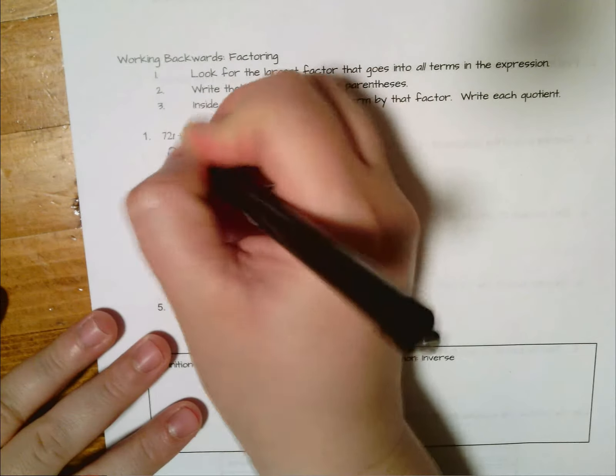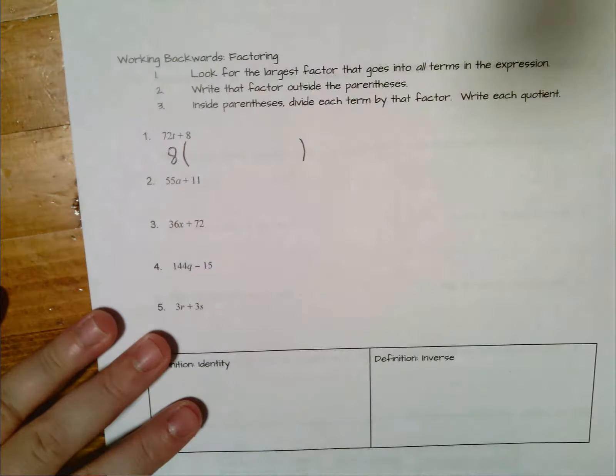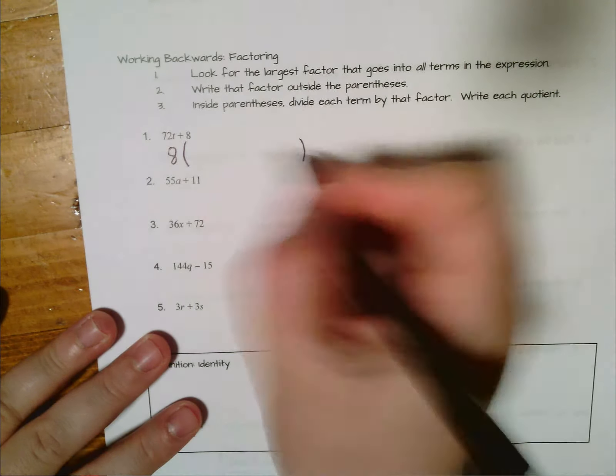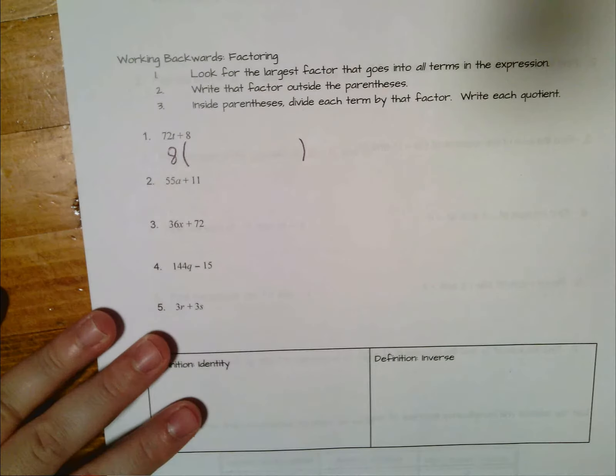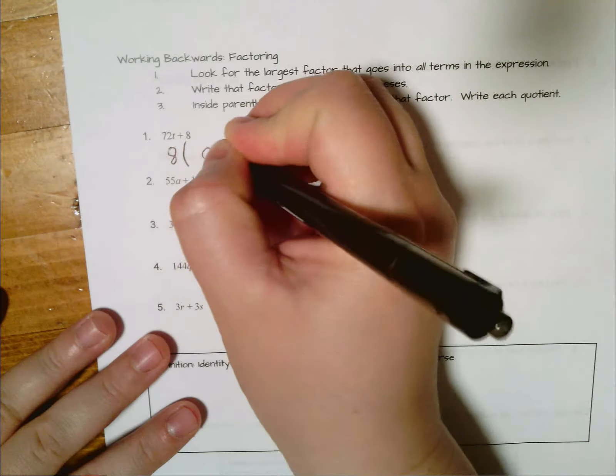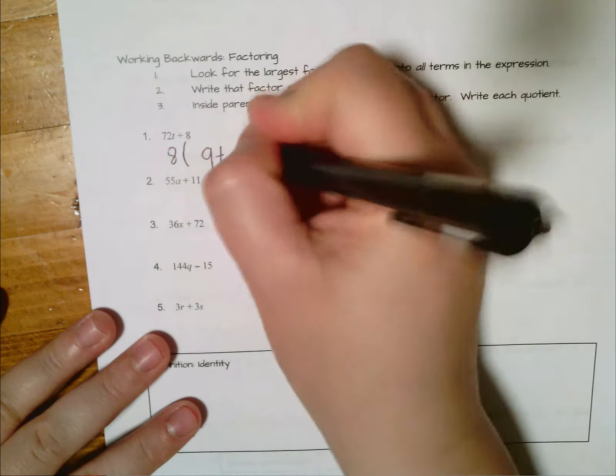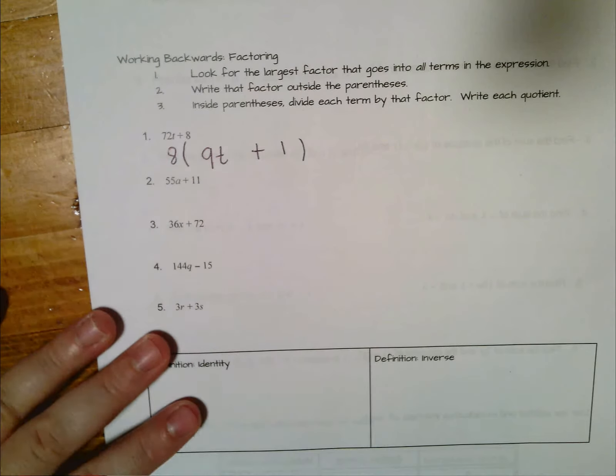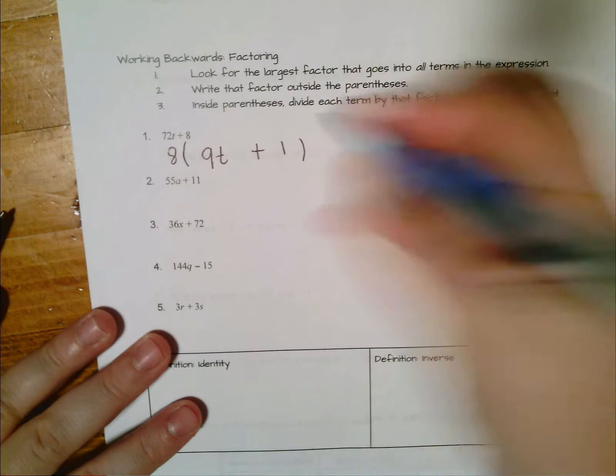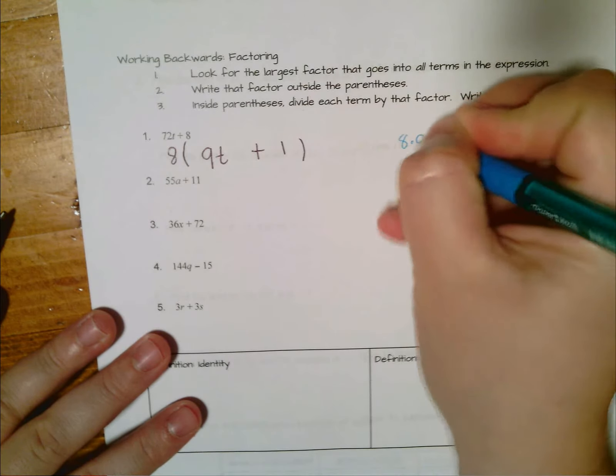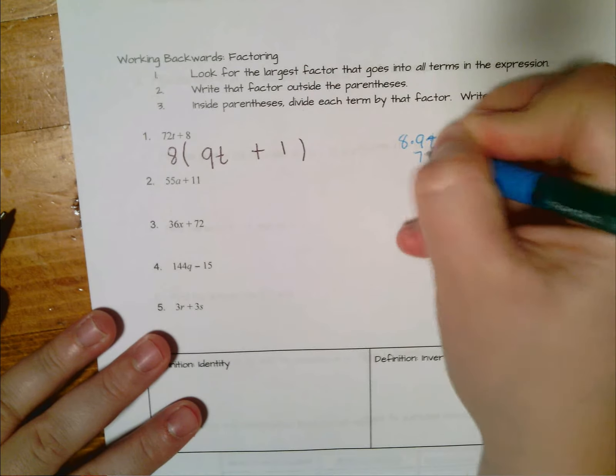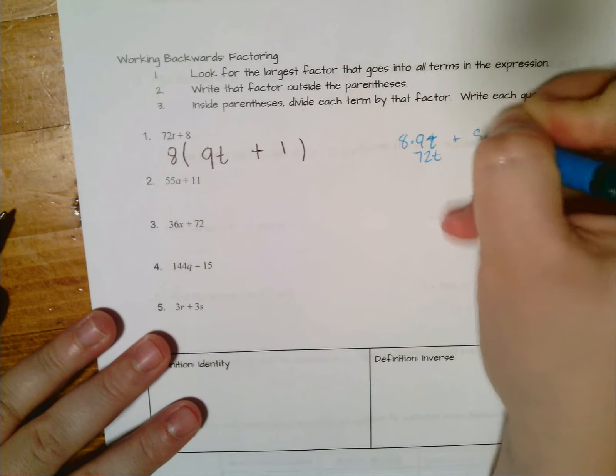So what we're going to do is we're going to write eight outside the set of parentheses, and inside the parentheses we're going to divide both of these terms by eight. So 72 divided by eight, that'll give me nine, I'm talking about 9t, and then eight divided by itself is one. So what I'm doing there is I'm saying if I worked backwards and distributed, eight times 9t would give me 72t and eight times one would give me eight, so these two are equivalent expressions.